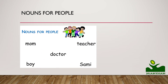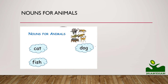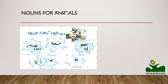Nouns for people could be: mom, doctor, boy, teacher, etc. Nouns for animals: cat, fish, dog, horse, birds — anything. That is nouns for animals.